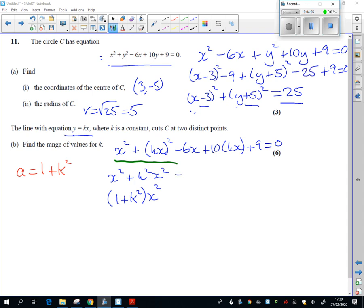So then I've got my x term. It's minus 6x plus 10kx. And the same thing again, basically you want to take x out as a common factor. I just need to be careful here because I've got a negative and a positive.